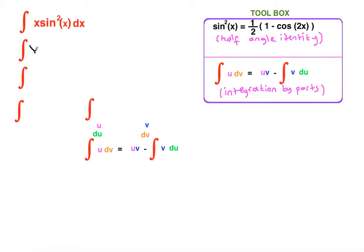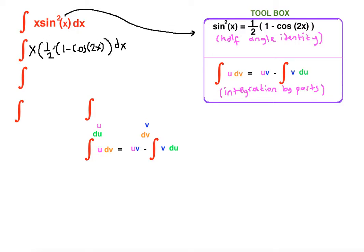Our first step is to substitute sin²(x) with the half angle identity, which is ½(1 - cos(2x)). We can pull the constant to the front and distribute x inside the parenthesis, giving us x times 1 and x·cos(2x).